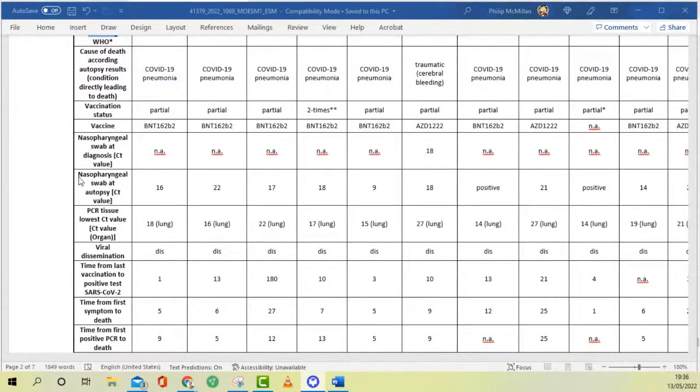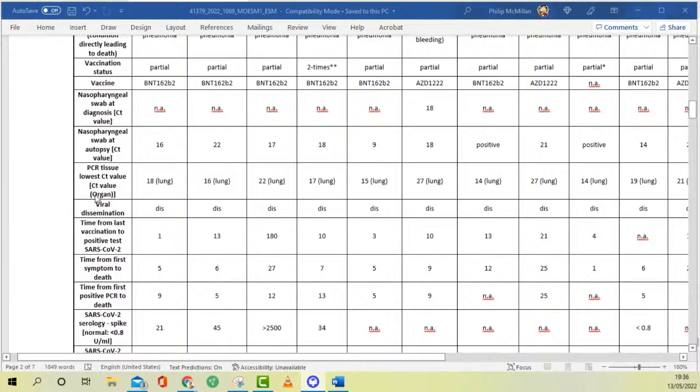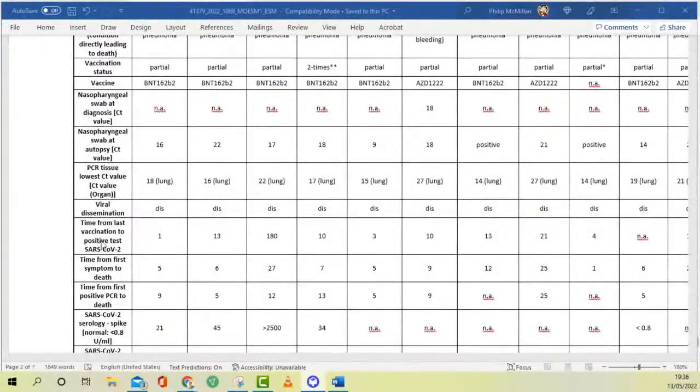Nasopharyngeal swab at autopsy, again the cycle threshold here you can see is relatively low. PCR tissue, lower CT value, relatively low and primarily in the lungs, and this is for the partially vaccinated. Viral dissemination, that means if they were finding virus in multiple tissues, this is important. There seems to be a lot of dissemination, which we will also be going into when I'm discussing the paper in more detail as to why I think that mechanism could possibly occur.